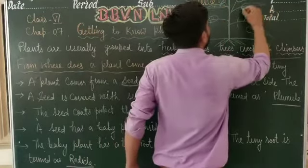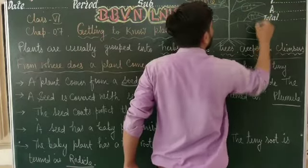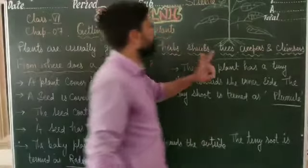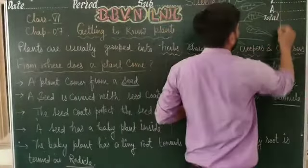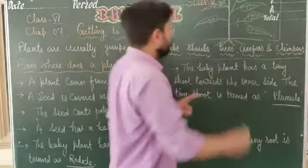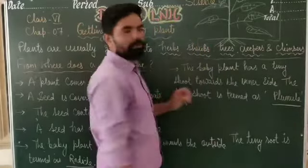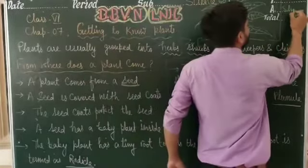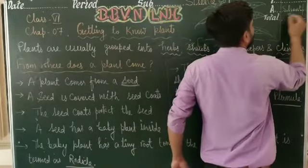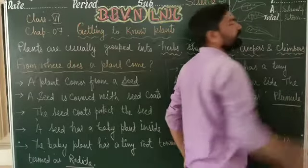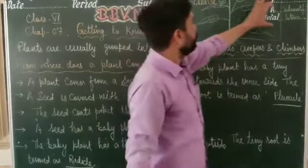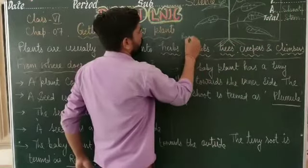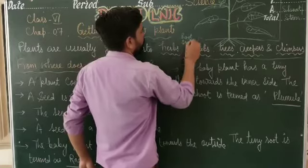Plant mainly दो systems में divided होता है — one part above the ground और second part below the ground। Above the ground जो part होता है उसे shoot कहते हैं। तो plants contain two systems: shoot system and root system।